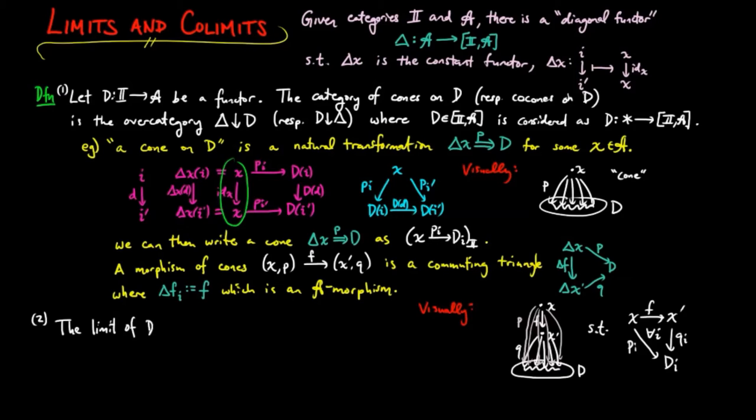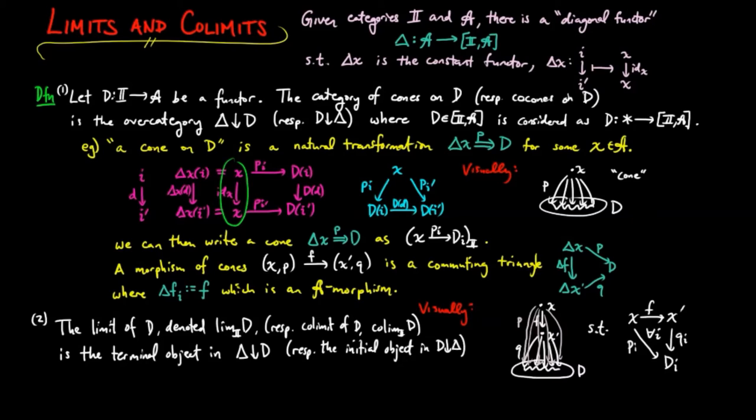We can then define the limit of D, denoted lim_I D, respectively colimit of D, denoted colim_I D, to be the terminal object in the category of cones on D, respectively the initial object in the category of co-cones on D.